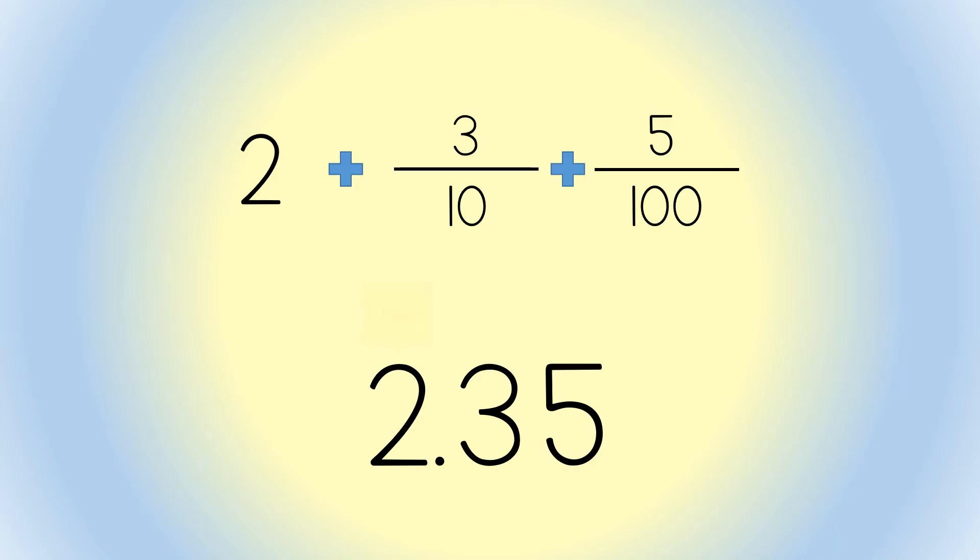Read as 2 and 35 hundredths. You say hundredths because the hundredths place is the lesser place.